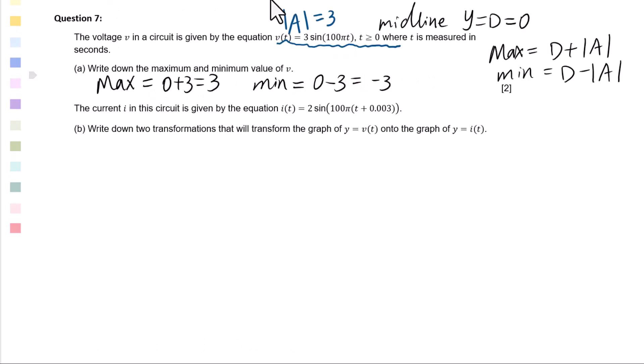Current i in this circuit is given by the equation i(t) = 2sin(100π(t + 0.003)). Write down two transformations that will transform the graph of y = v(t) into the graph of y = i(t). Let's compare v(t) and i(t).